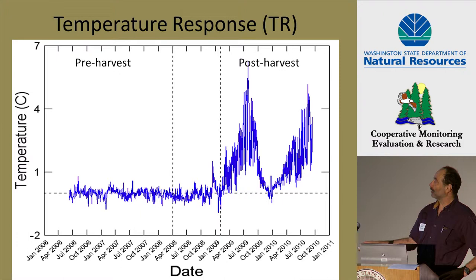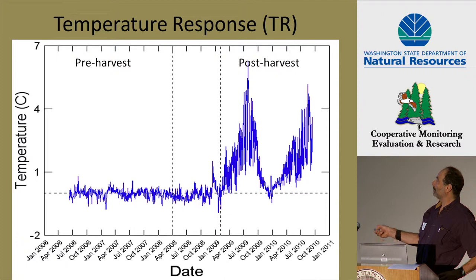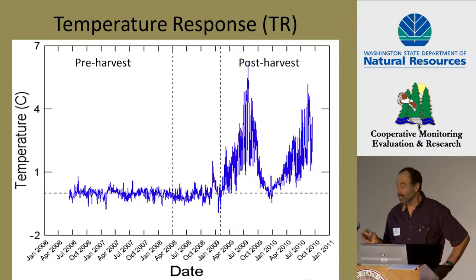If you plot TR over time, you can see it's very low pre-harvest, hovering around zero. During and after harvest, at certain times of the year, it diverges by a lot — up to five, six, seven degrees at this particular site. Looking at it this way makes the temperature response much more obvious than examining the actual temperatures themselves.